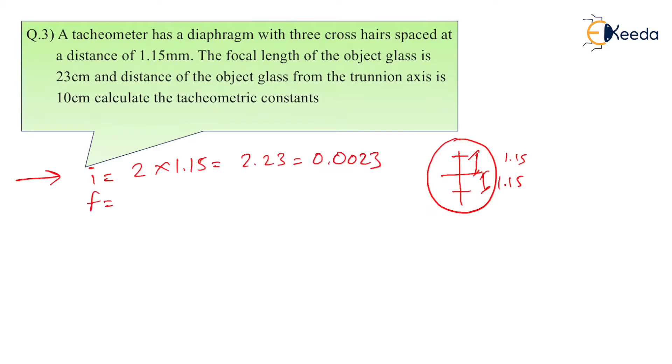So we have to convert this into meters. That will be 0.23 meters. Then the distance between the object glass and the trunnion axis is given as 10 cm. That is nothing but D. We have to convert it into meters, and we have to calculate the constants of tachometer.